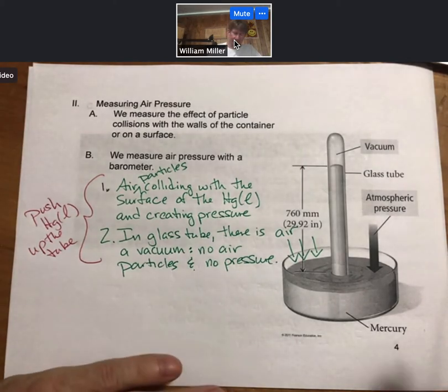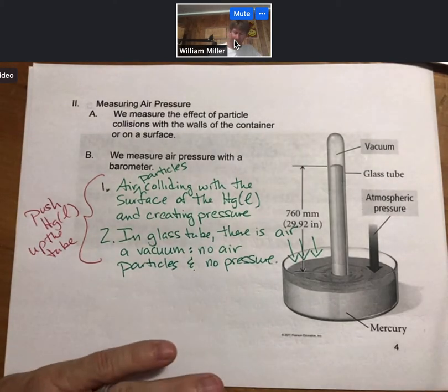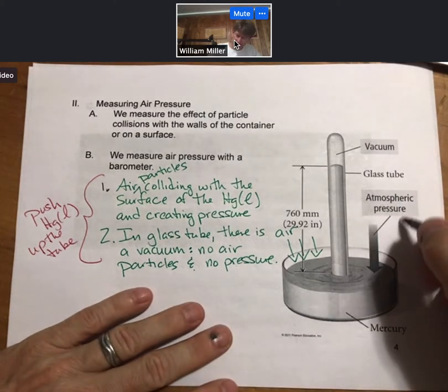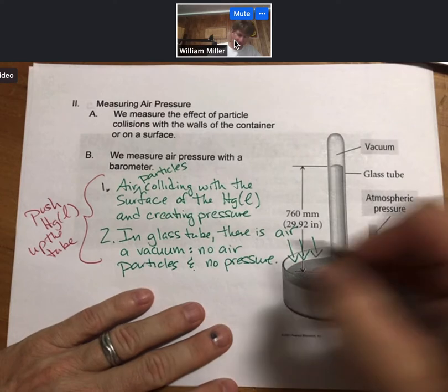And then what you might say is, well then why isn't the tube completely full? Well, we also have, and that's the atmospheric pressure we're showing here that I just described, the mercury is pulled down by gravity.